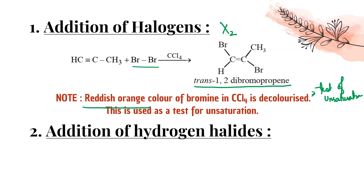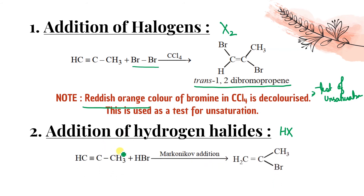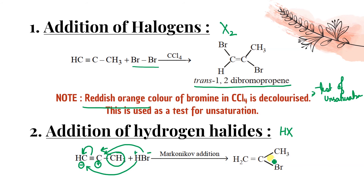Addition of hydrogen halide (HX): for an unsymmetrical alkyne, we follow Markovnikov's rule. Using inductive effect: the CH₃ group gives a +I effect, so the bond breaks on that side — Br⁻ gets negative charge and H⁺ gets positive charge. H⁺ attaches to the carbon with more hydrogen and Br⁻ attaches to the other carbon, forming a vinylic halide.